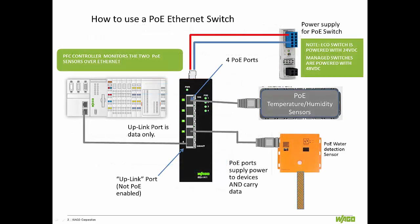Within automation networks, especially complex ones, any cable that can be eliminated reduces wiring effort and saves space, labor, and material costs. And this is precisely what WAGO's new Power over Ethernet switches can do for any size of network. With the WAGO PoE switches, the user can connect PoE sensors to non-PoE devices, such as WAGO's PFC controllers.